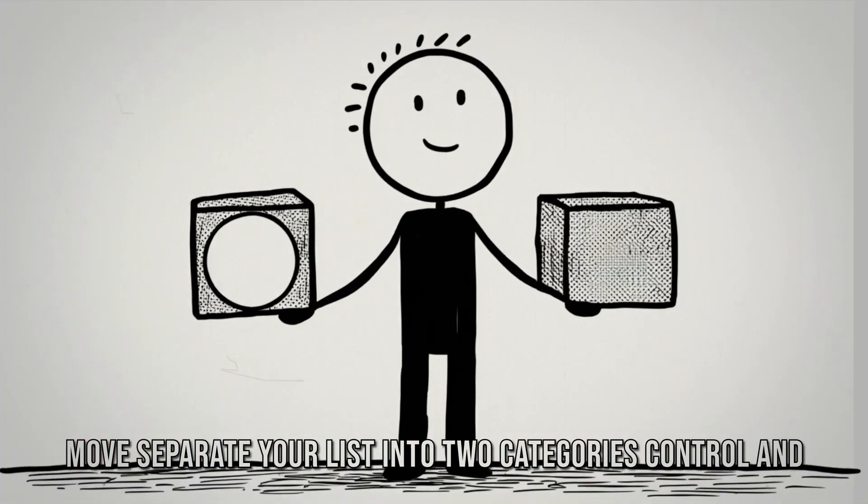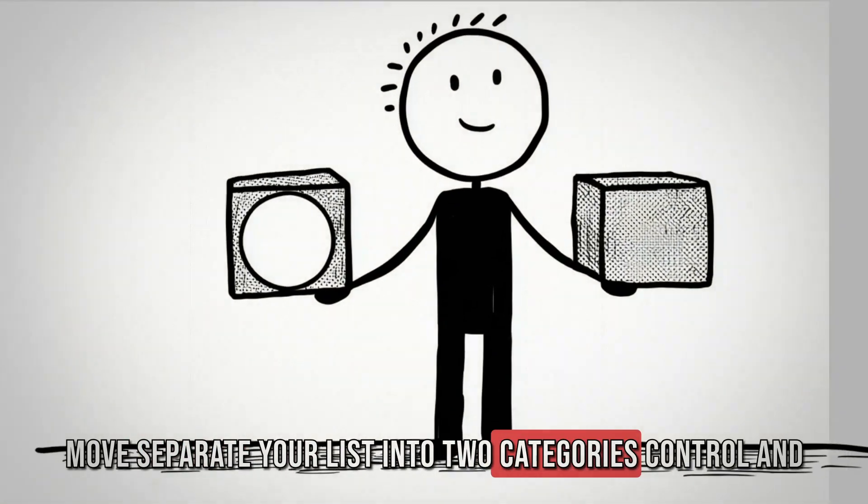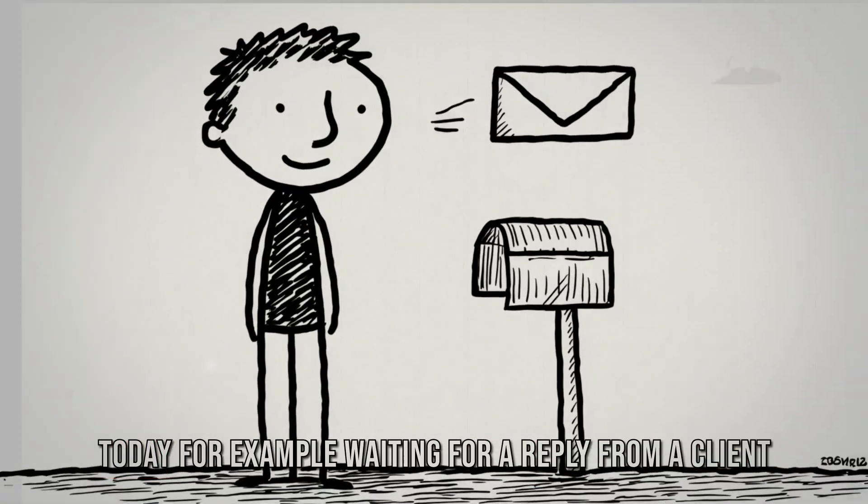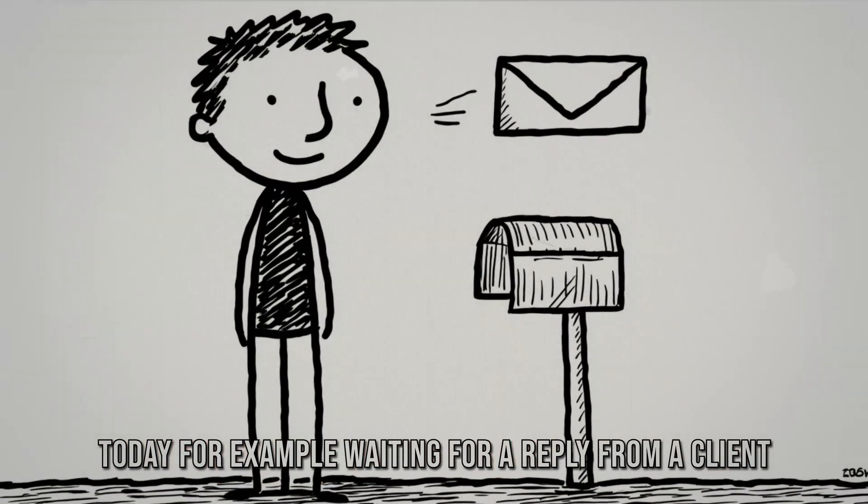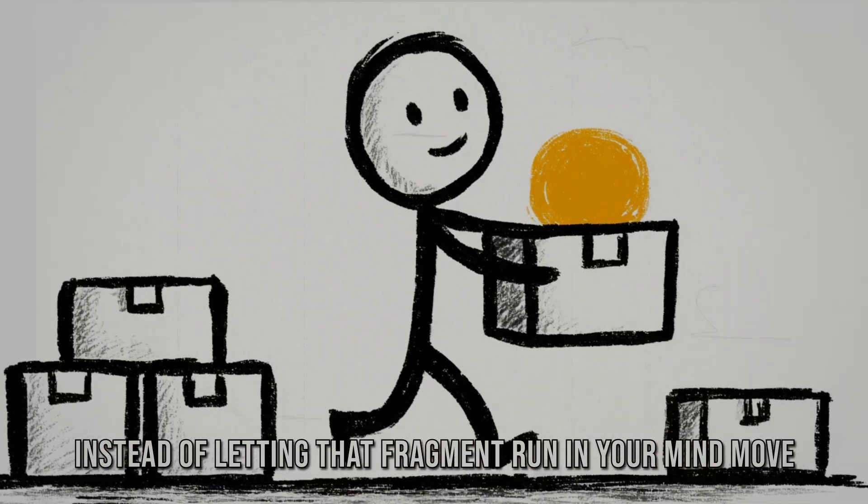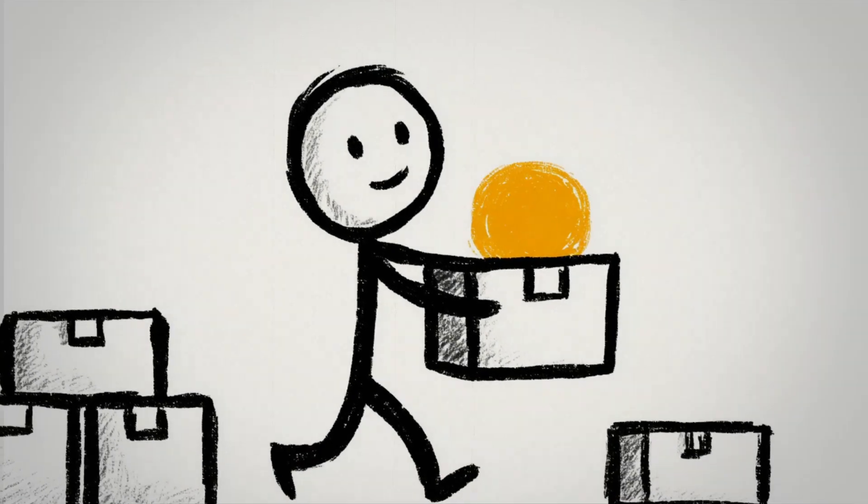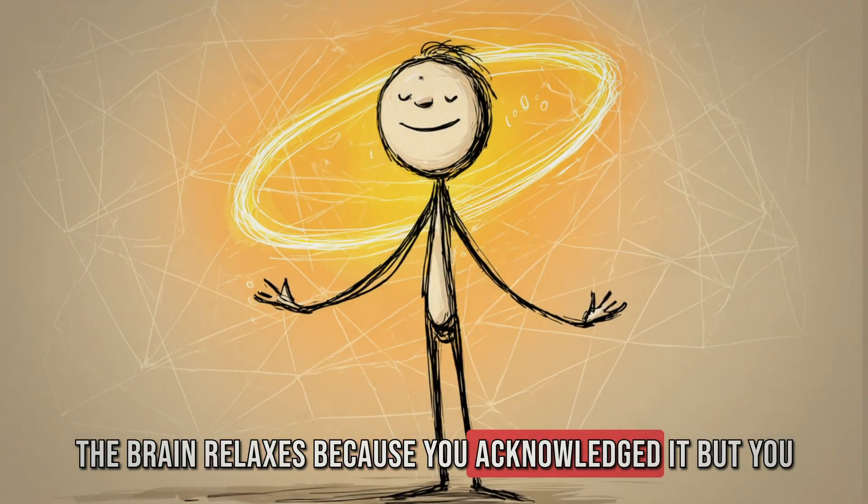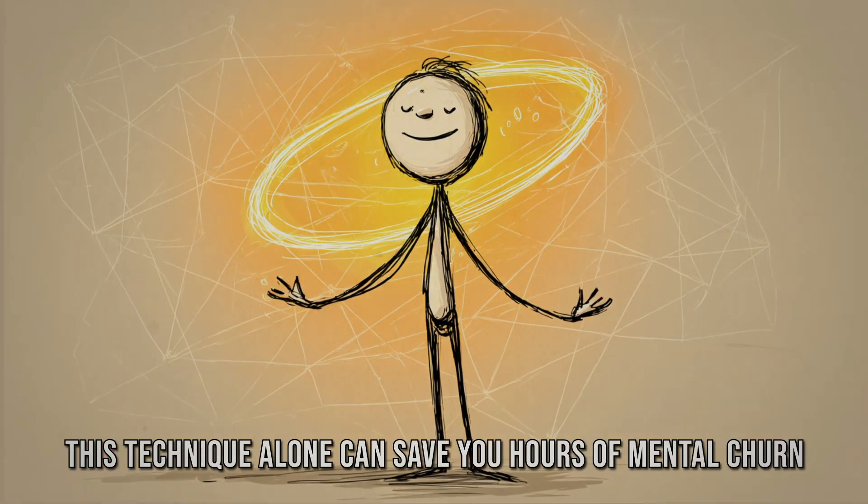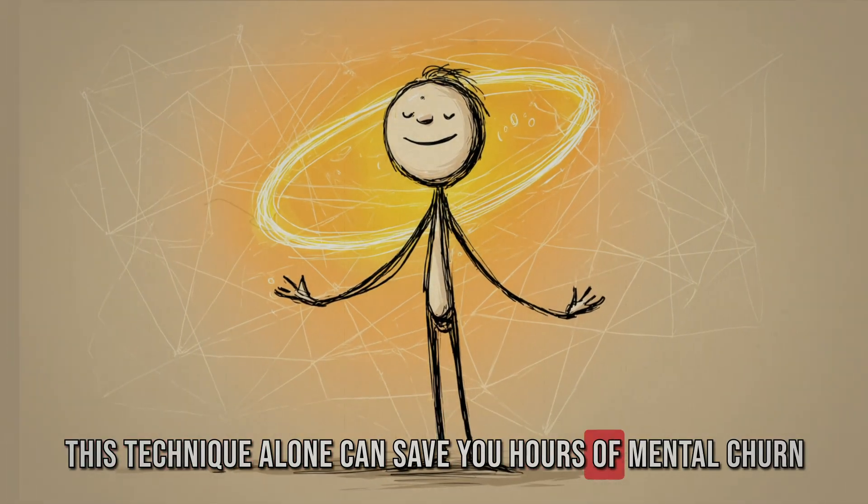One more advanced move. Separate your list into two categories, control and no control. Many loops are things you can't directly influence today. For example, waiting for a reply from a client. Instead of letting that fragment run in your mind, move it to a no-control list. The brain relaxes because you acknowledged it, but you stop wasting bandwidth replaying it. This technique alone can save you hours of mental churn.